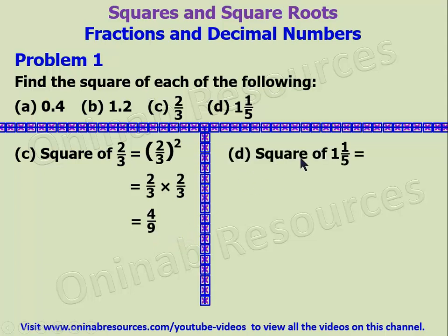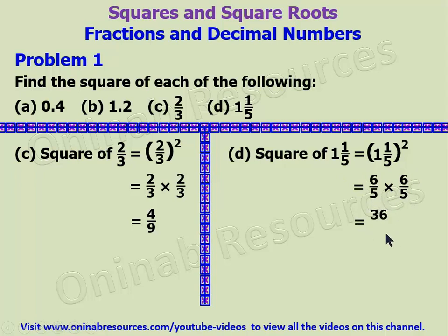Then we go to D. The square of 1 whole number 1 over 5 means 1 whole number 1 over 5 raised to the power of 2. We express this as an improper fraction, which gives us 6 over 5 times 6 over 5. We multiply the numerators: 6 times 6 gives 36, and 5 times 5 gives 25. Expressing as a mixed fraction: 25 goes into 36 once, remainder 11, so we have 1 whole number 11 over 25. That is the solution of problem 1D, which brings us to the end of problem 1.